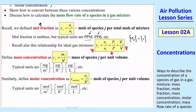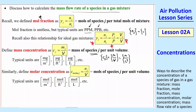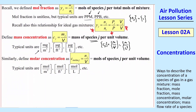Now let's define mass concentration. This is like a density — mass over volume — except it's the mass of species j per unit volume, not the total mass. For example, the density of air in a tank would be everything in the tank divided by volume; this is just species j. The dimensions of cj are the same as density: mass per volume, or mass over L cubed. Typical units include milligram per meter cubed, microgram per foot cubed, or microgram per liter — milligram per meter cubed is probably the most common.